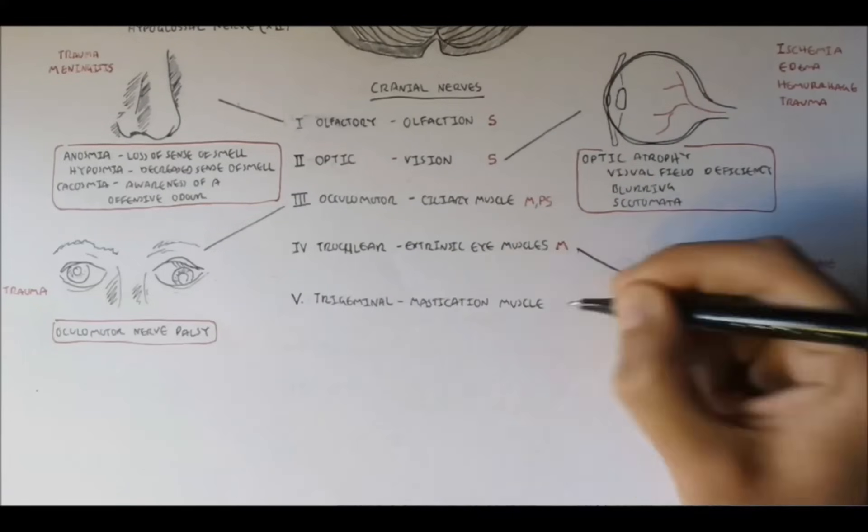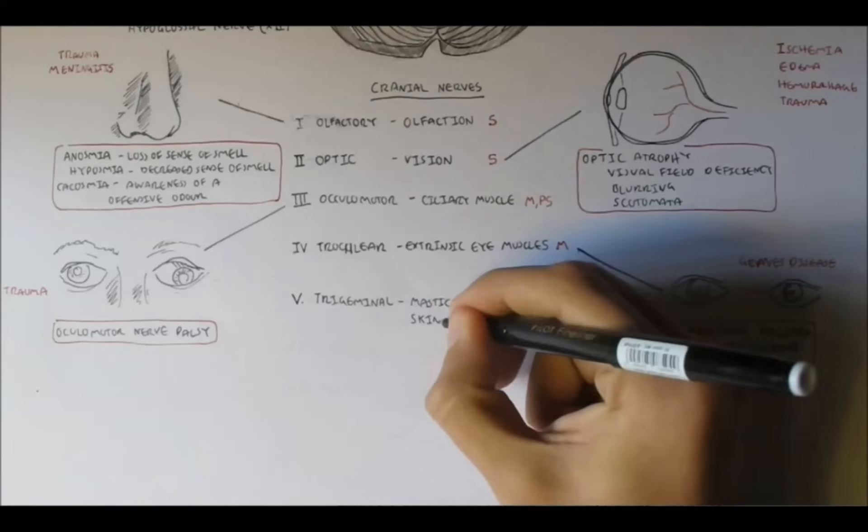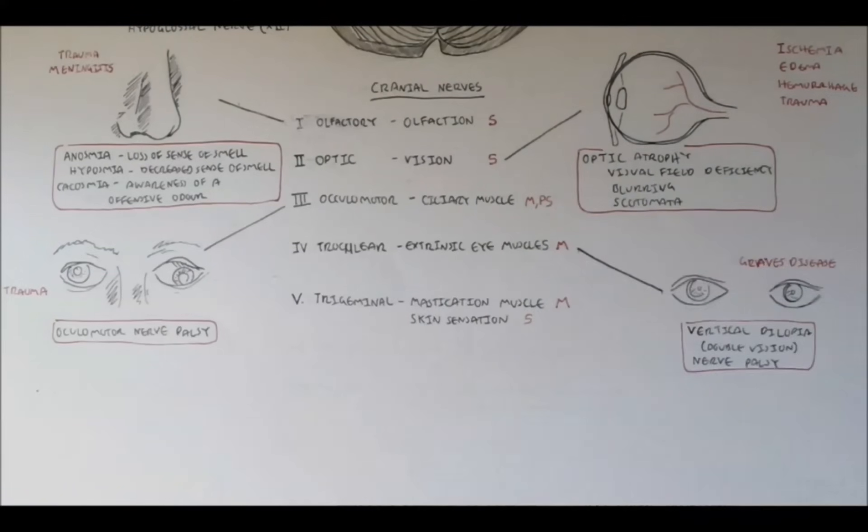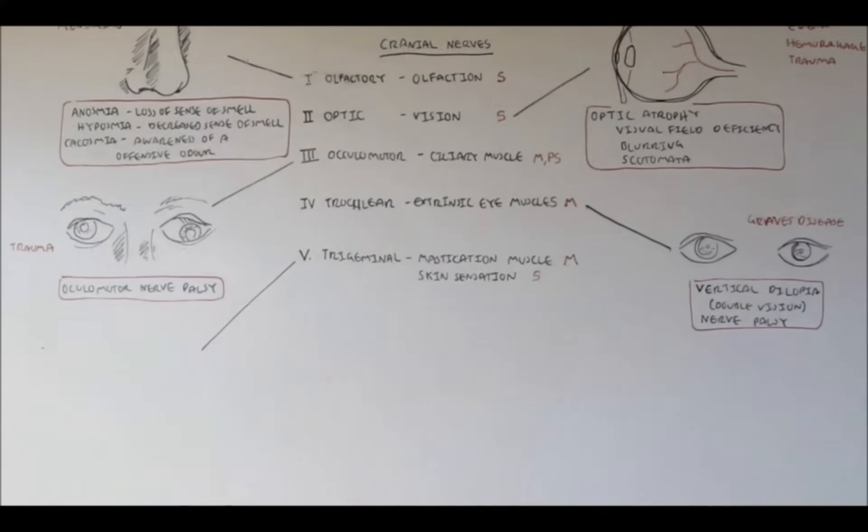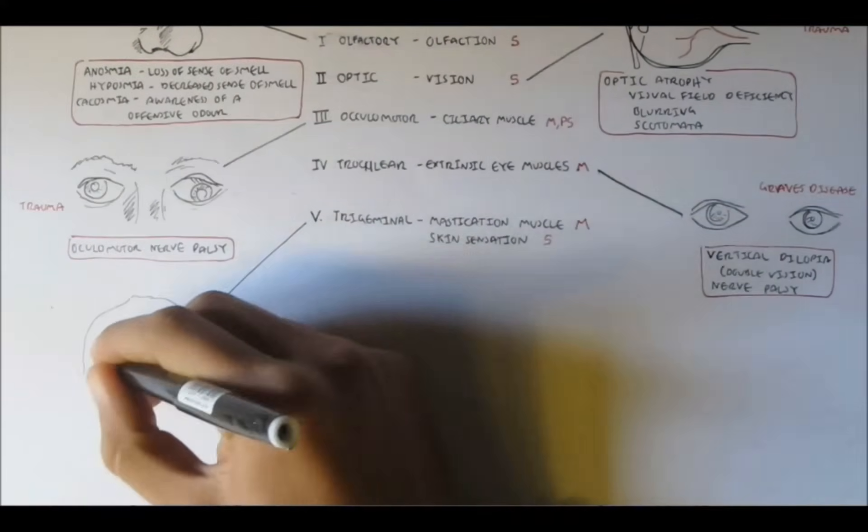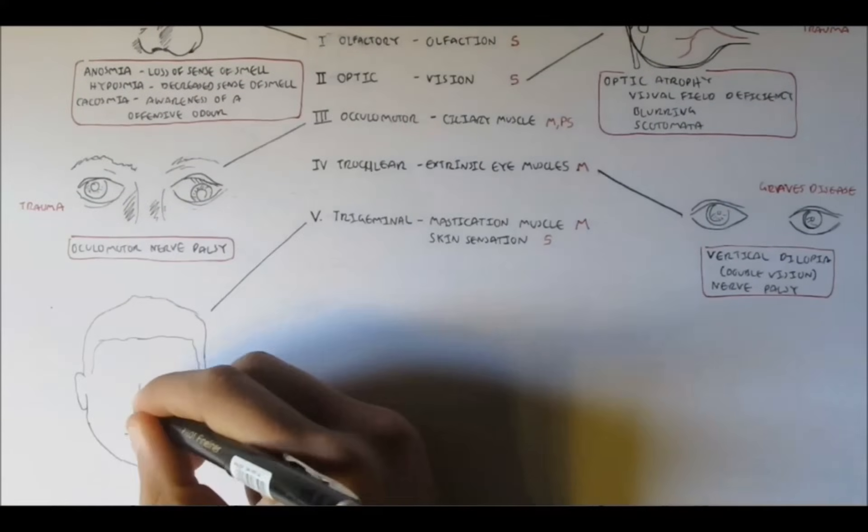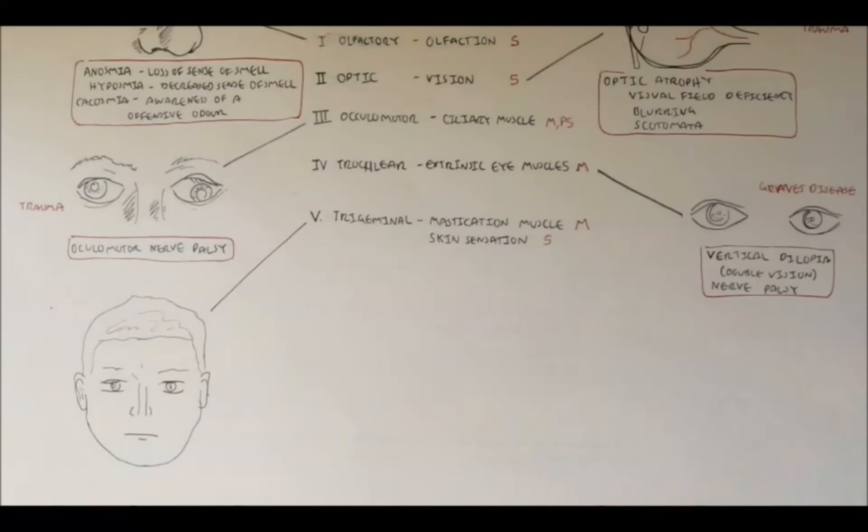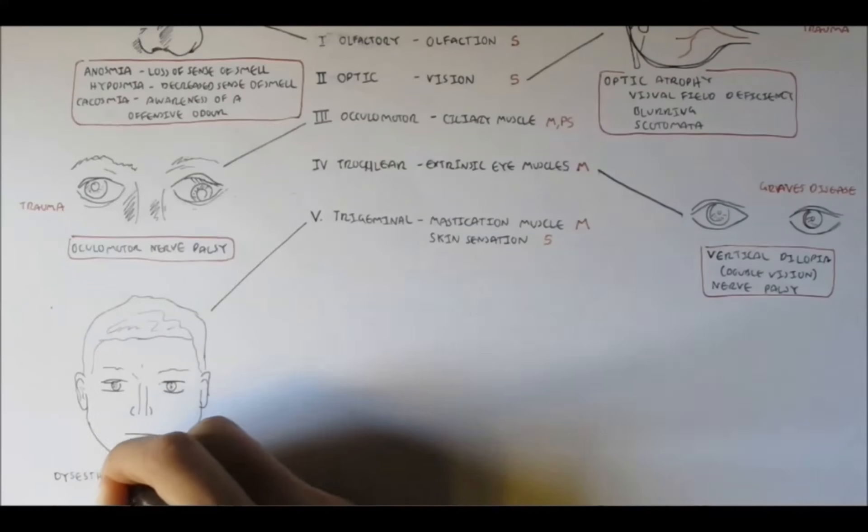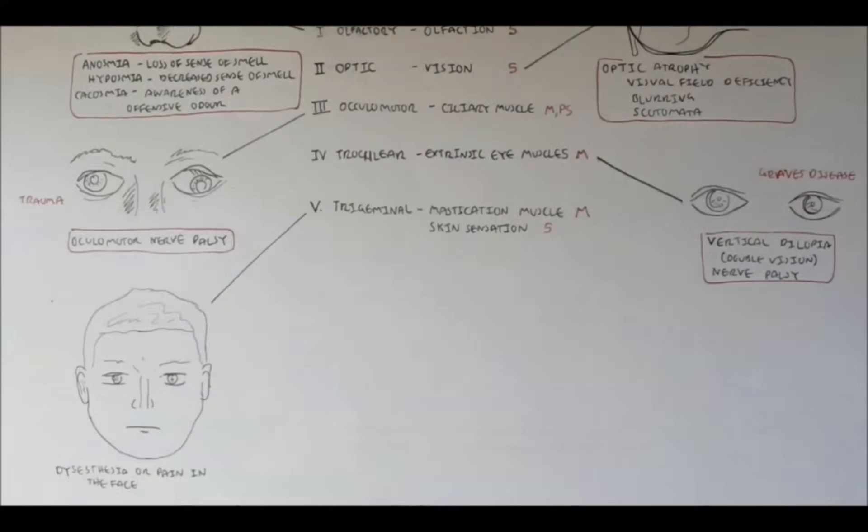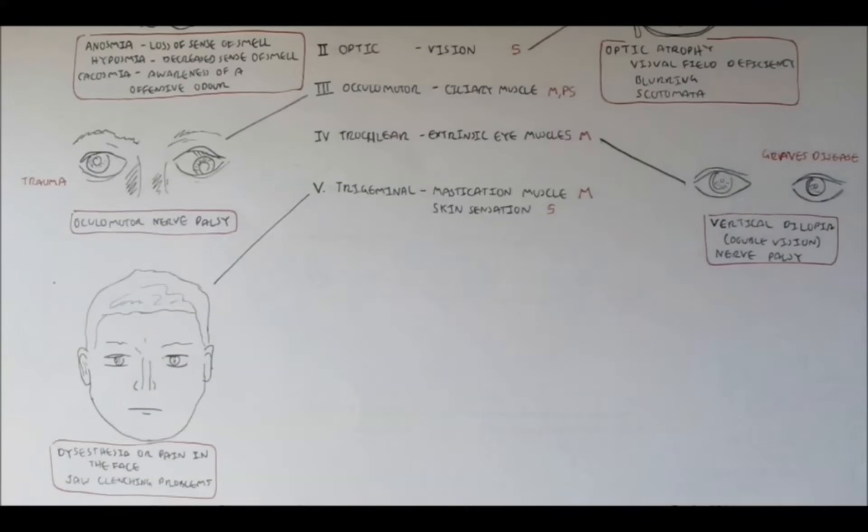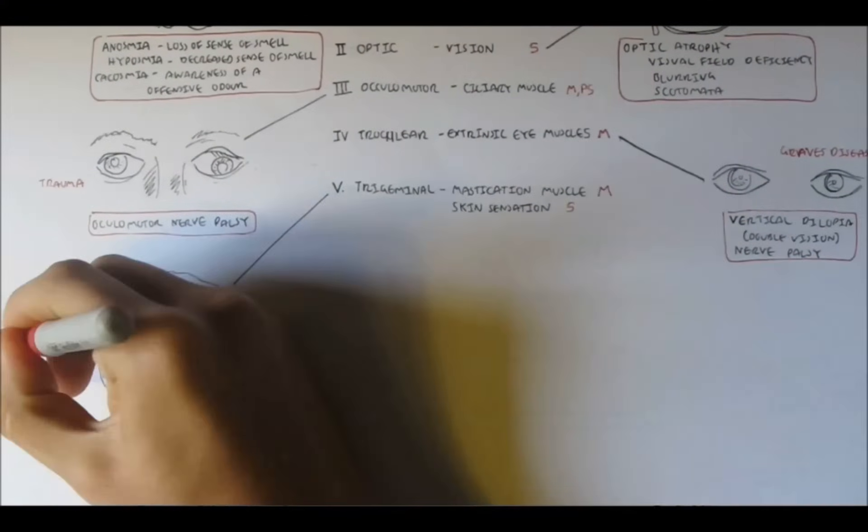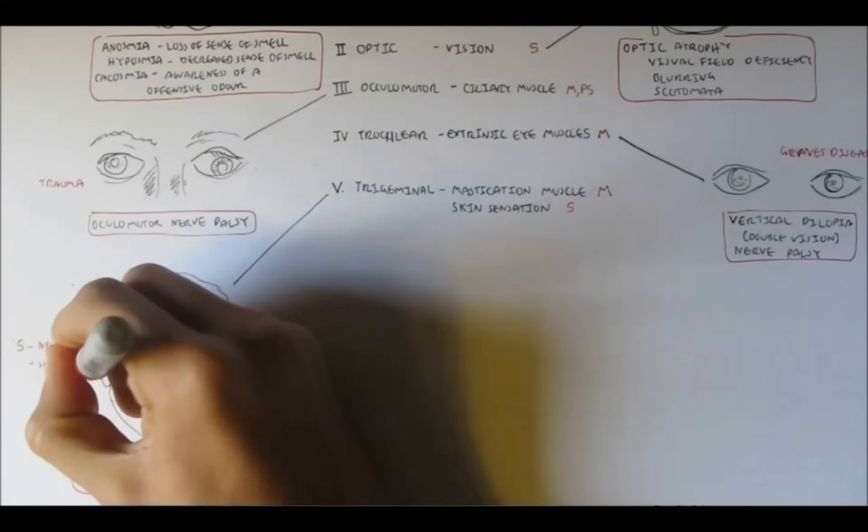Nerve 5 is the trigeminal nerve, which is important for the mastication muscles, so chewing muscles, your jaws. So it's a motor nerve, but it is also a sensory nerve for skin sensation in the face. Damage to the trigeminal nerve can cause the person to experience pain, essentially, all over the face, but particularly in the forehead region. And there is also difficulty in clenching the jaw, because the trigeminal nerve is responsible for the mastication muscles.